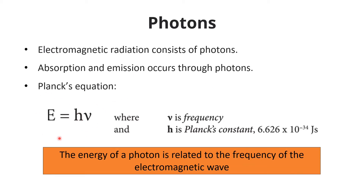The frequency and energy of photons are related by Planck's equation: E = hν, where h is Planck's constant (6.626 × 10⁻³⁴ J·s), ν is the frequency, and E is the energy of the photon. So the energy of the photon is directly related to the frequency of the electromagnetic radiation.